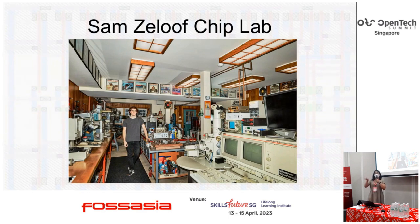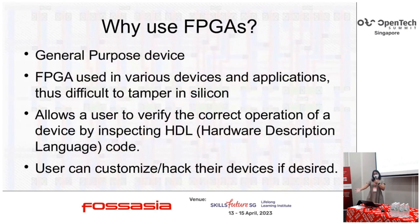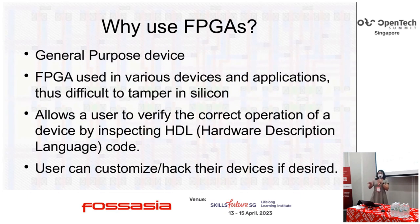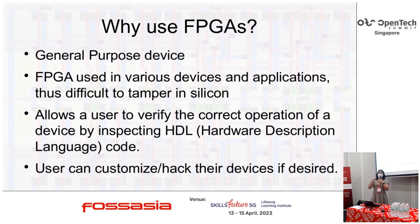I'm not saying we should all be doing chip fabrication at home — that becomes very expensive. What we can use are FPGAs, because they are general-purpose devices used in all sorts of applications, from networking to radio. It's very difficult to target a specific batch of FPGAs because you have no idea where that batch will end up. So it's much more difficult to attack from a supply chain perspective. And if you write HDL code, you can actually inspect that code and verify the operation of the hardware description language code.